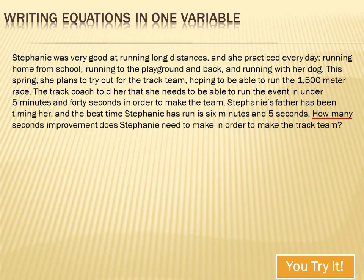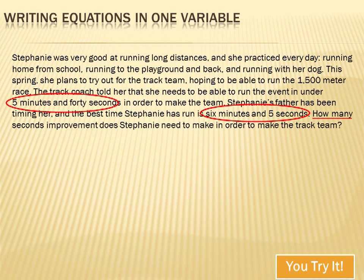The track coach told her she needs to run the event in under 5 minutes and 40 seconds — that's a number, and I bet it's important, so I'm going to circle it. Stephanie's father has been timing her, and her best time is 6 minutes and 5 seconds — there's another number, I'll circle it too. The question is: how many seconds of improvement does Stephanie need to make in order to make the track team? Let's underline that question.